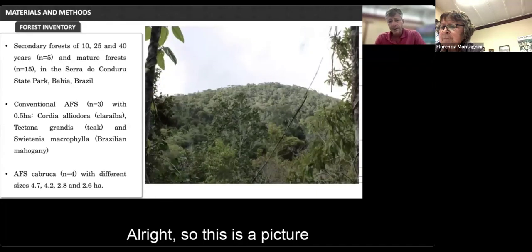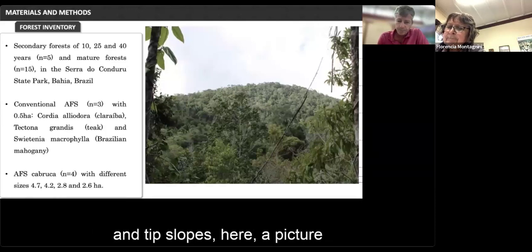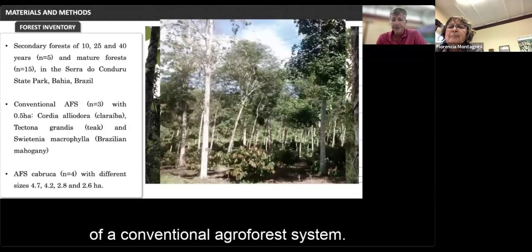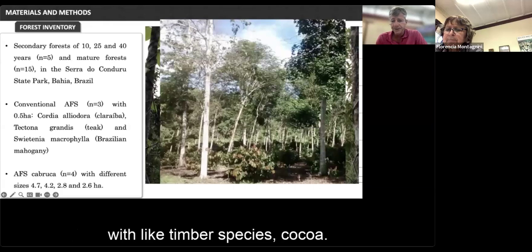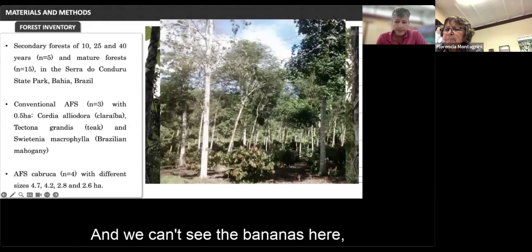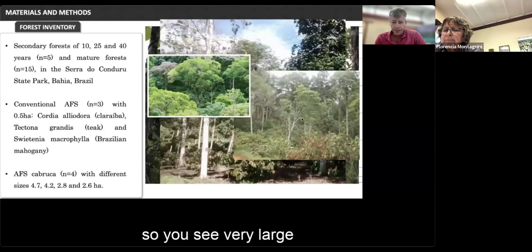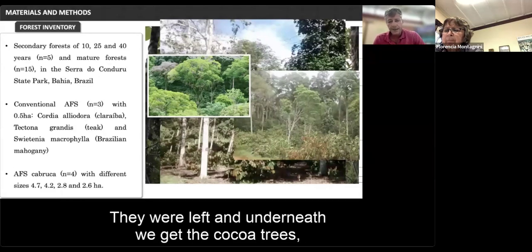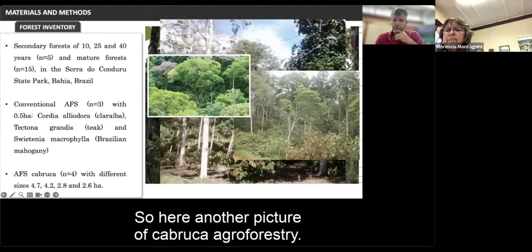Here is a picture illustrating the mature forest, mostly found on ridges and steep slopes. Here is a picture of a conventional agroforest system where trees are planted in lines — rubber trees mixed with timber species and cocoa, with bananas also present. And here is the Cabruca agroforestry system: very large remnant trees from the natural forest were left, and underneath, cocoa trees are planted in the understory.